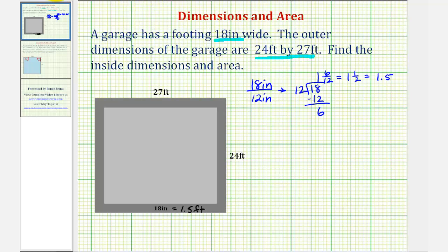And now to find the inner dimensions, we want to find the length of this side and the length of this side. Well, we know the total length from here to here is 24 feet, but of course that's too long. So to find the inside length, we would take 24 feet and then subtract 1.5 feet for this length and then also subtract 1.5 feet for this length.